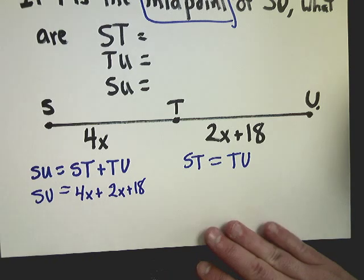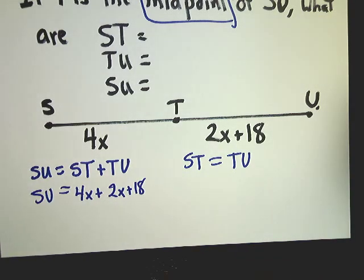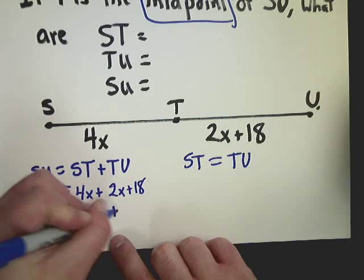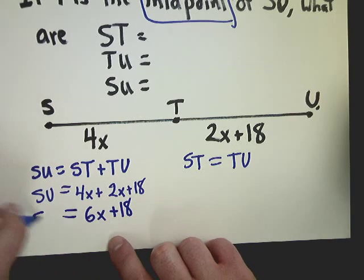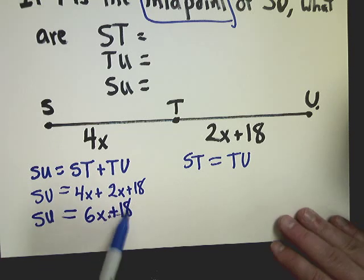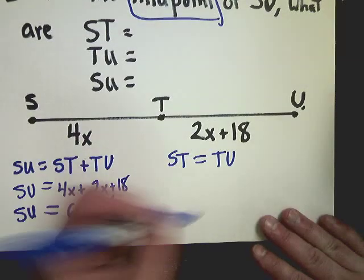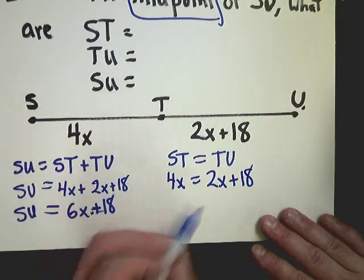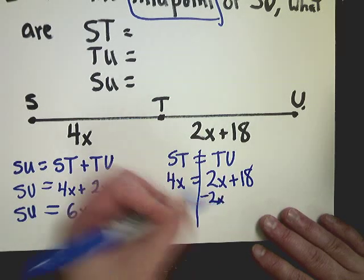Now, I can't solve for SU yet. Well, I could in terms of, I could find out if it's, I could combine like terms and say that it's 6x plus 18. But that's all I know about SU right now. It's possible that you'll get asked this question, but that's not what they're asking here. On the other side, 4x is equal to 2x plus 18.